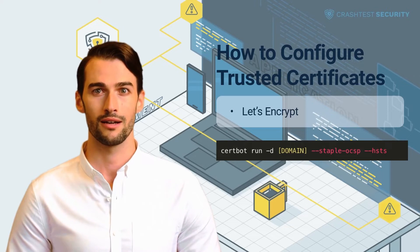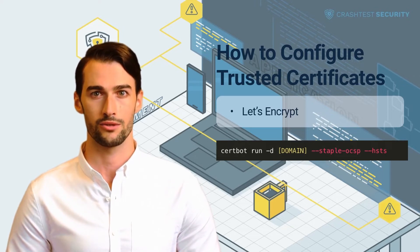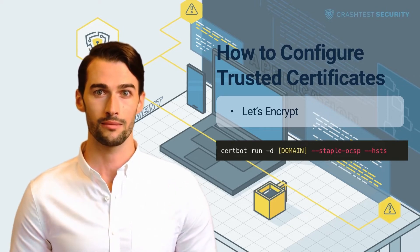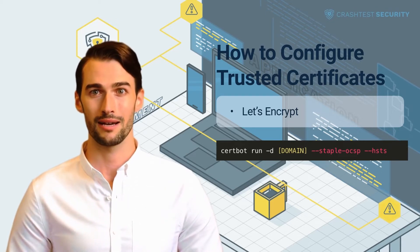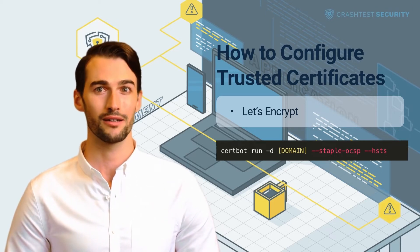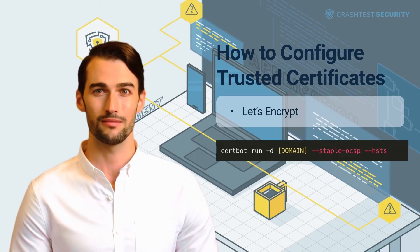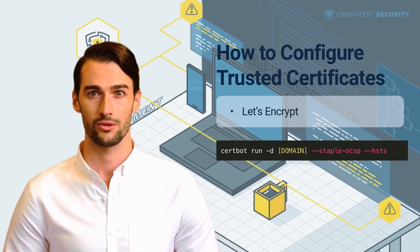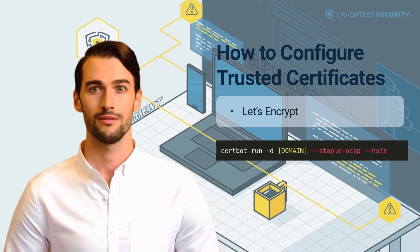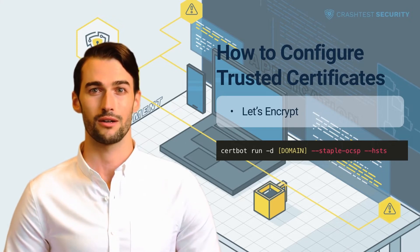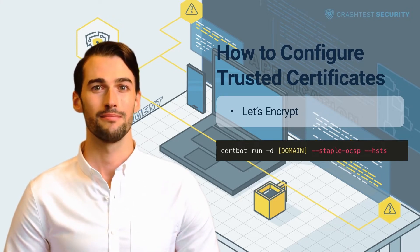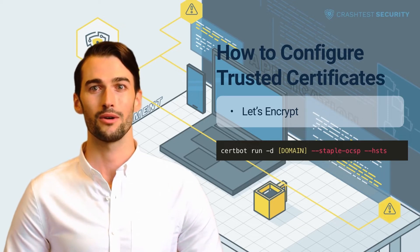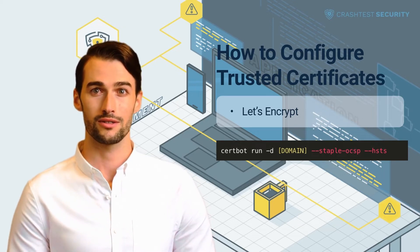To issue a trusted certificate for your web application, the certificate needs to contain the correct information for your web application, such as the domain name as the certificate's common name. In addition, the certificate needs to be signed by a certificate authority that the user's browser trusts. The web server must then be configured to present the certificate on incoming HTTPS requests. Use one of the following guides to generate and use a trusted certificate.